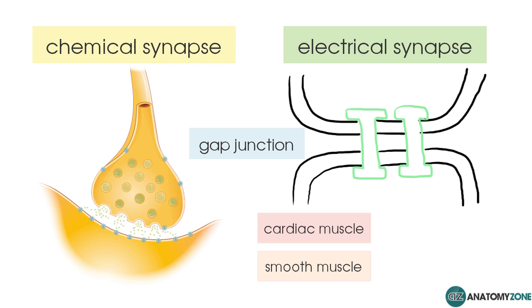Examples of the electrical synapse can be found in cardiac muscle and also in smooth muscle. The purpose of the electrical gap junction in cardiac muscle is extremely fast conduction. In a beating heart, you need extremely fast and synchronised conduction so that the contraction of the heart is coordinated, giving you direct coupling from one cell to the other.